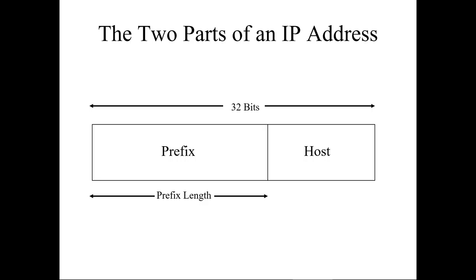How many parts are there to an IP address? There are two major parts: the prefix, or the network portion, and then the host bits. Remember that an IPv4 address is 32 bits long, broken up into four octets that are 8 bits each. That's why the maximum is 255 — in converting binary to decimal, there can only be 8 bits, and if there are 8 ones, that equals 255.